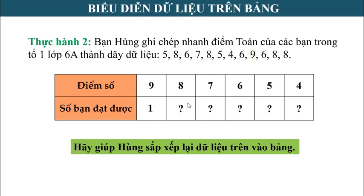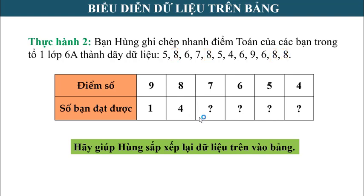Tiếp theo, muốn tìm số bạn đạt điểm 8, ta quan sát dãy dữ liệu và đếm số 8. Cô thấy có 4 số 8, nên số bạn đạt điểm 8 là 4 bạn. Thực hiện tương tự, cô xác định được: số bạn đạt điểm 7 là 1 bạn, điểm 6 là 3 bạn, điểm 5 là 2 bạn, điểm 4 là 1 bạn.